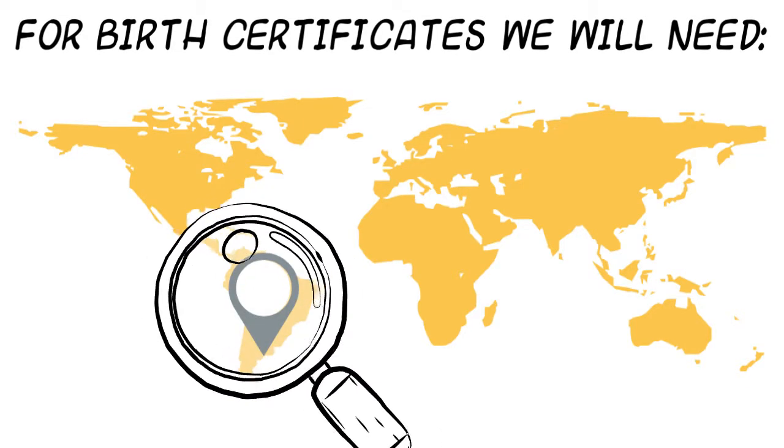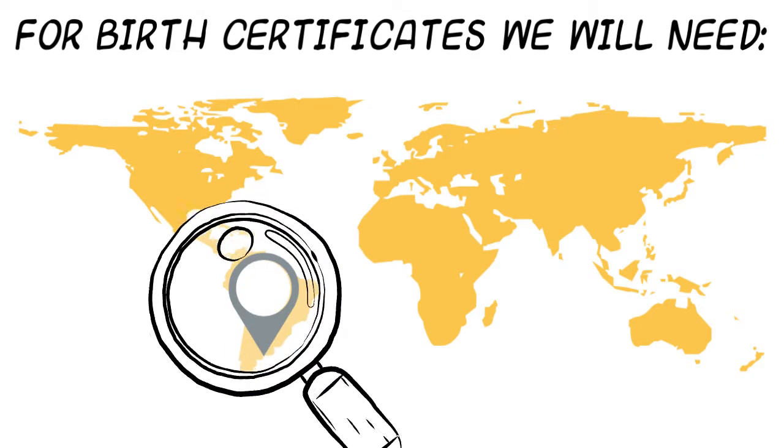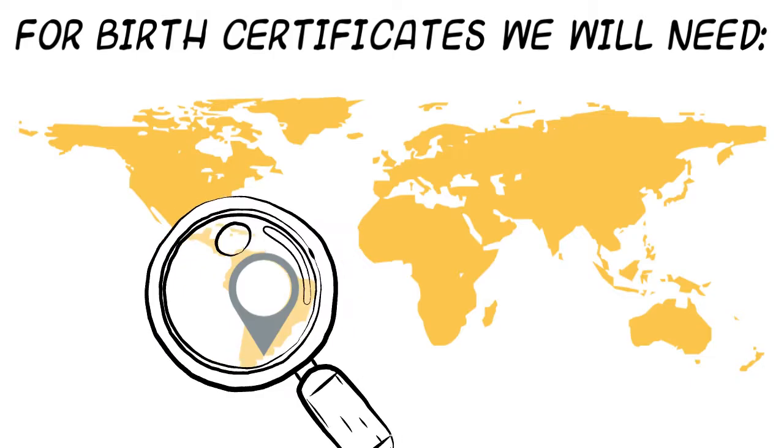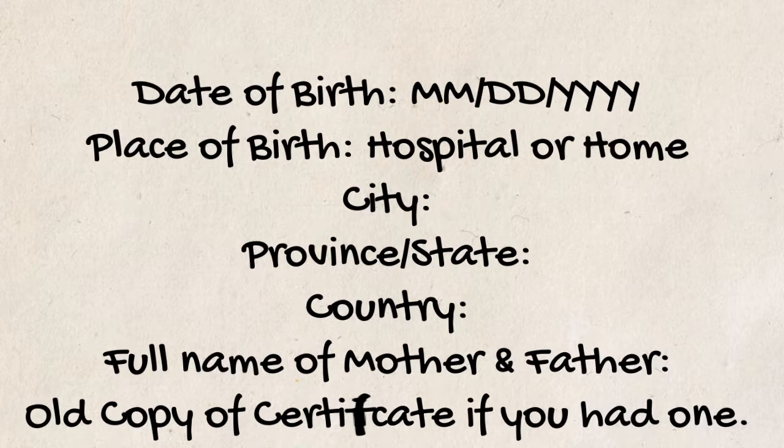For birth certificates, we will need: date of birth — month, day, year; place of birth — hospital or home; city, province, state, country; full name of mother and father; and an old copy of the certificate if you had one.